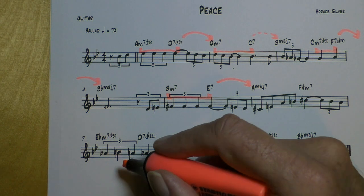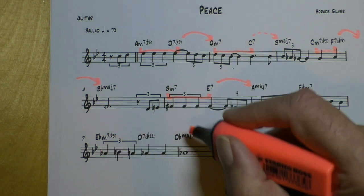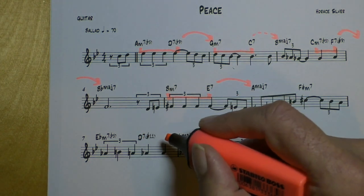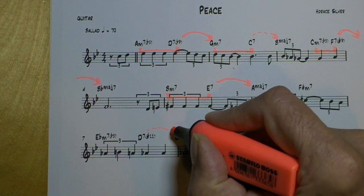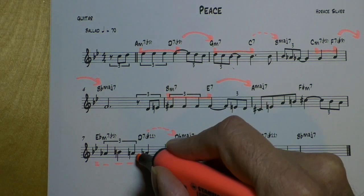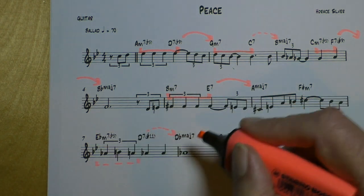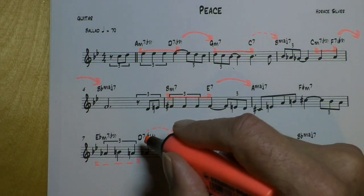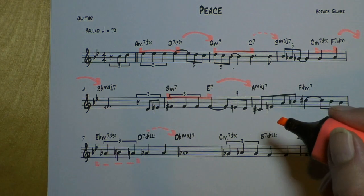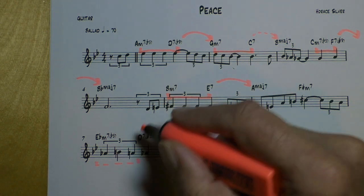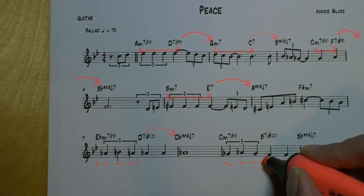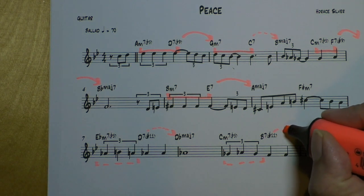Modulation to the next key. We have now Eb-7b5 going to Dbmaj7. So this is a substitute 5 and a substitute 2-5. Yes, we have substituted that Ab7 chord through a D7 sharp 11 chord. Though it's coming from minor, this is going to major. Same thing here, substitute 2-5 and substitute 5-1.